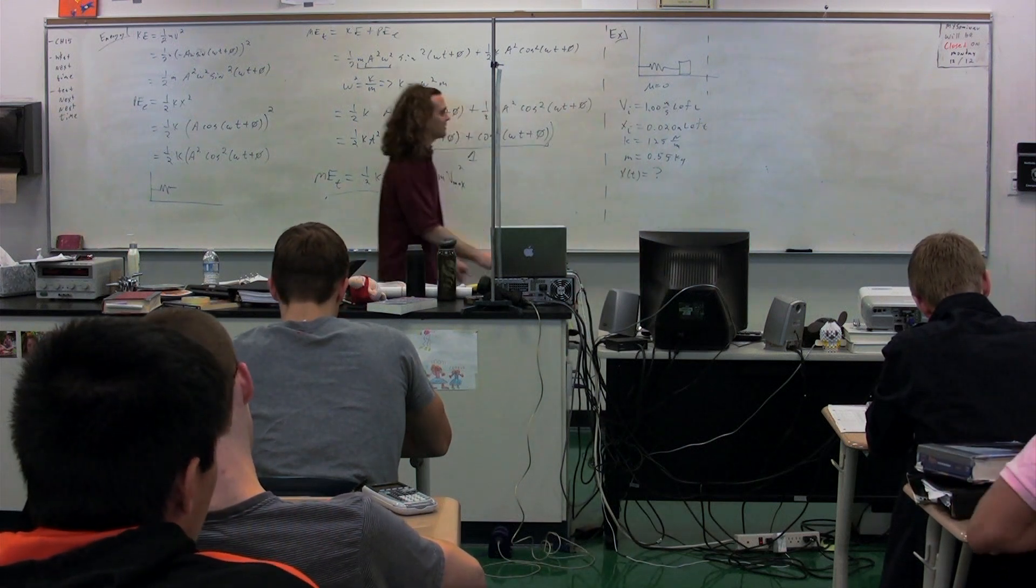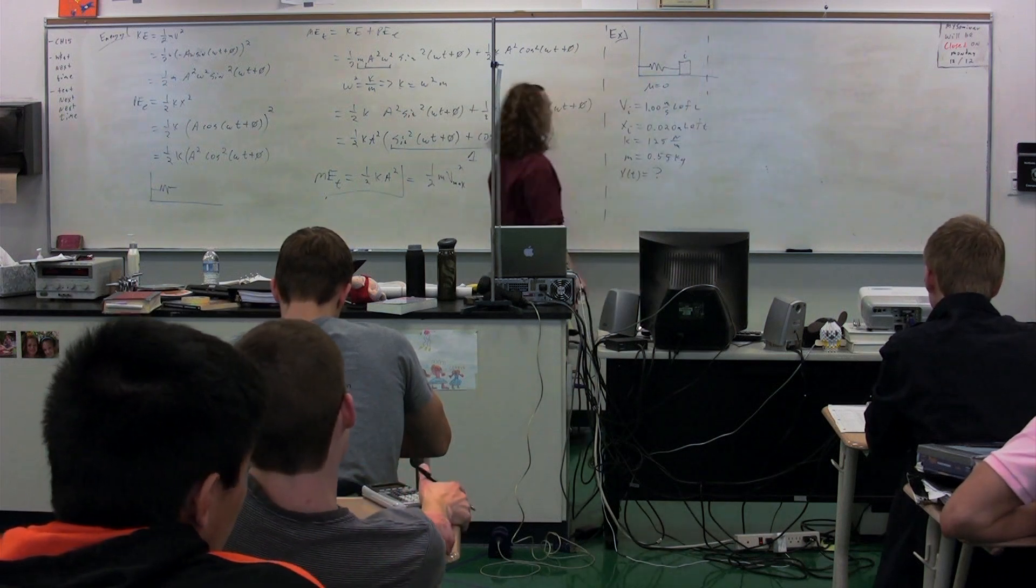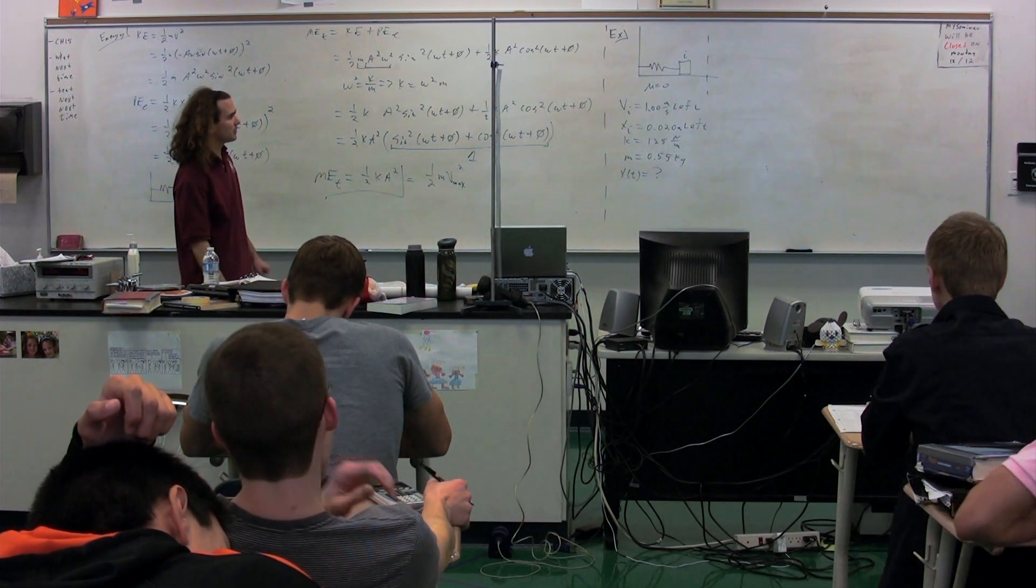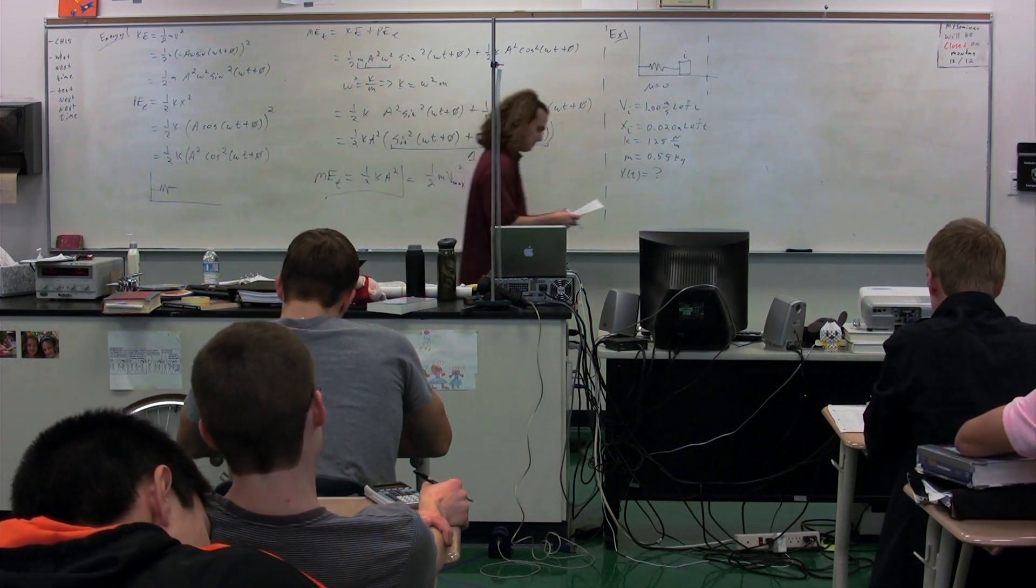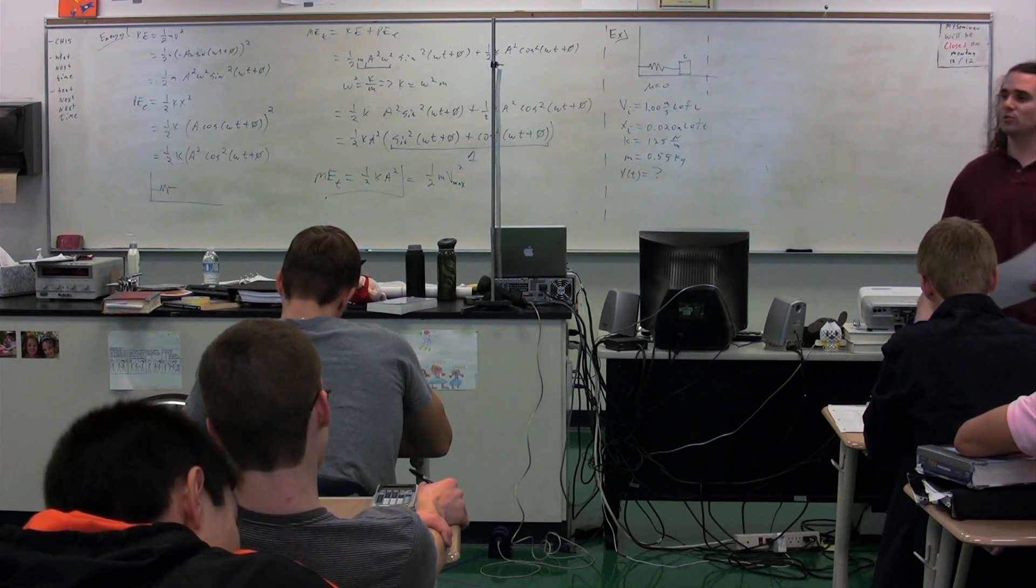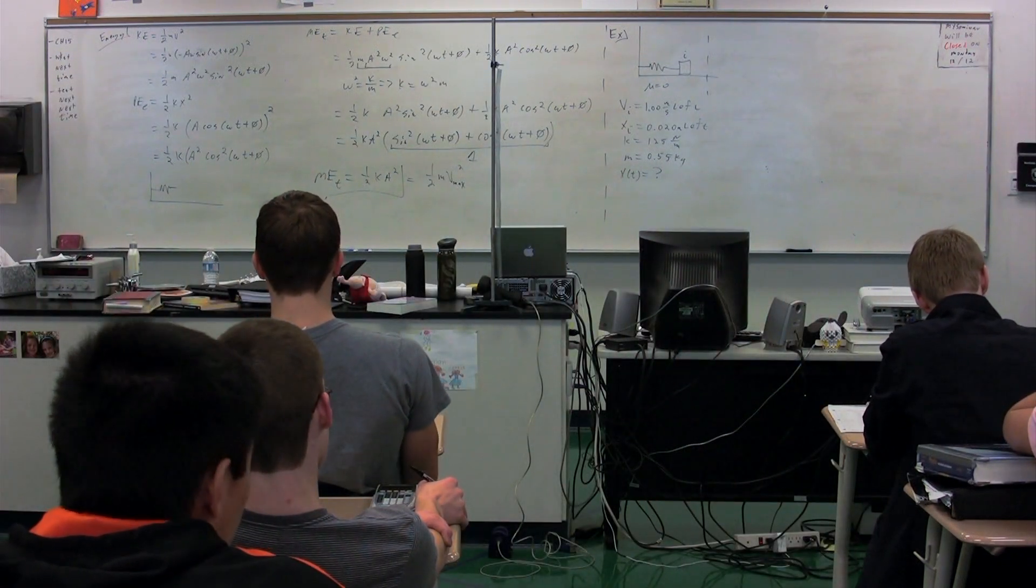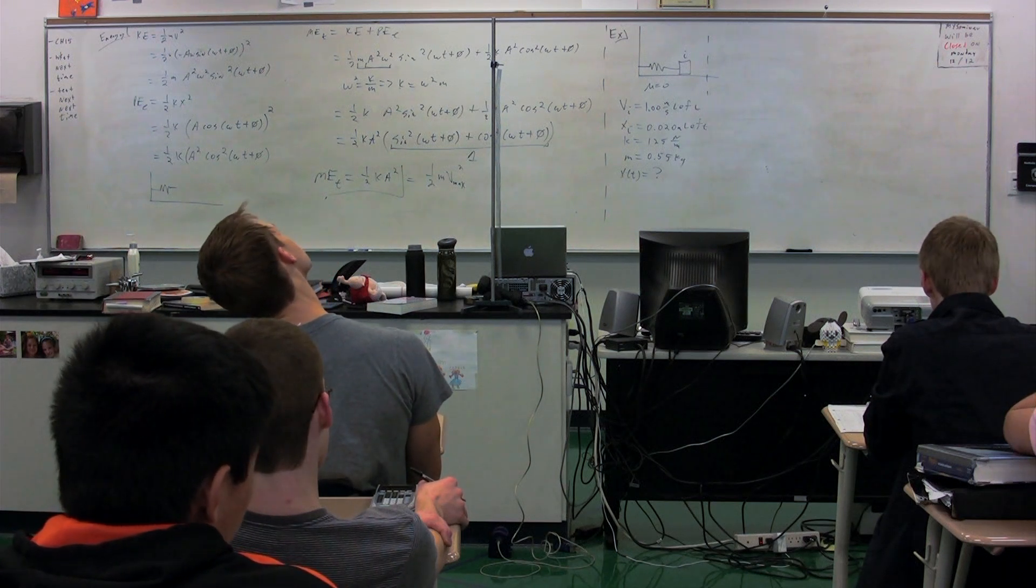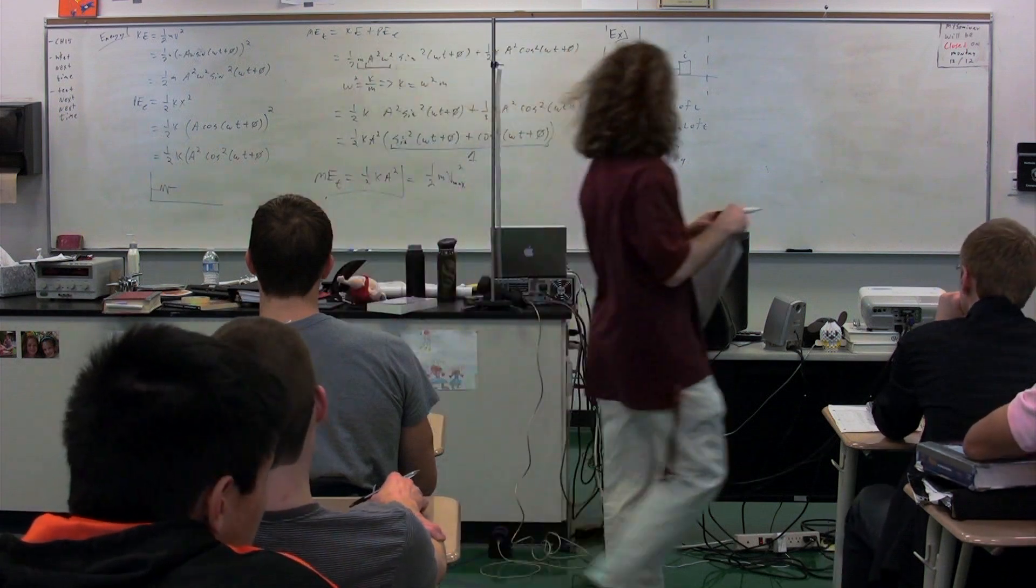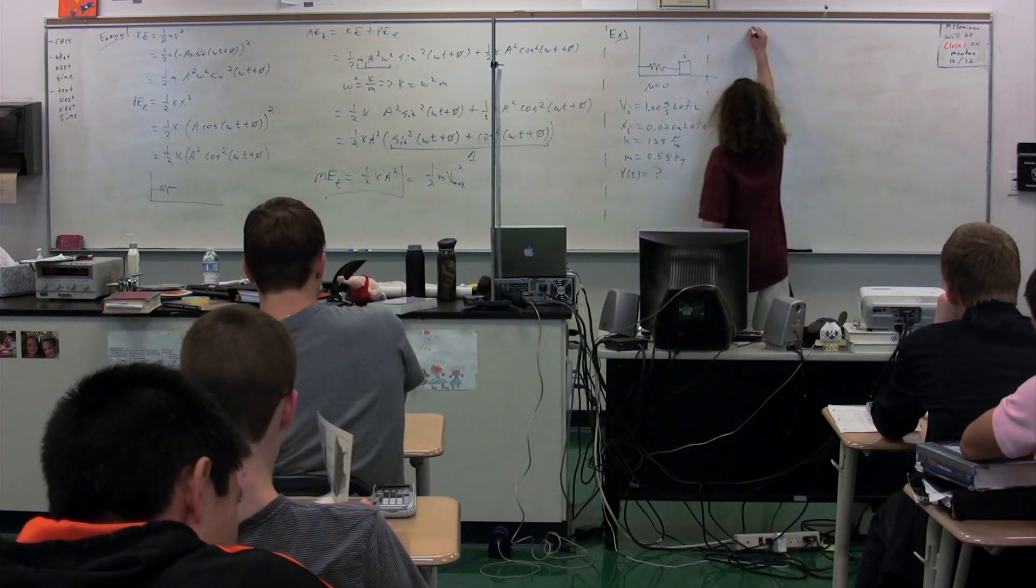So again, we know the initial velocity is moving to the left initially at this initial point right here. We know the initial position is 0.02 meters to the left of the equilibrium position. We know the spring constant and the mass of the object. Thoughts of things we could do to solve for anything having to do with this particular object? Conservation of mechanical energy is one thing. We know mechanical energy initial equals mechanical energy final. So let's start there.